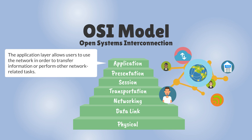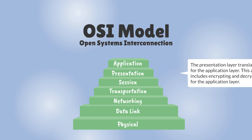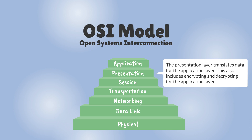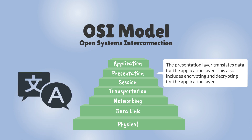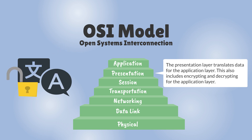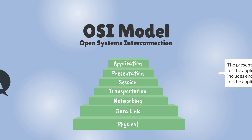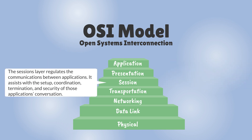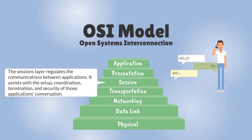The application layer allows users — human or software — to use the network in order to transfer information or perform other network-related tasks. The presentation layer translates data from the application layer. This also includes encryption and decryption for the application layer.